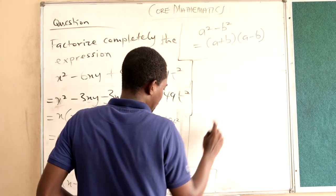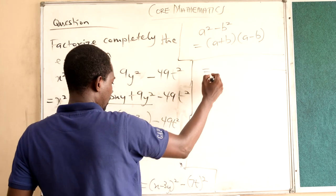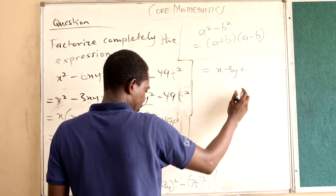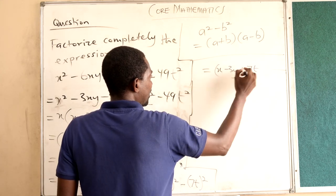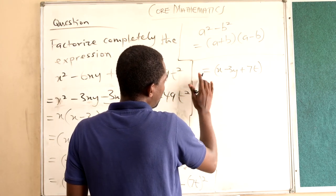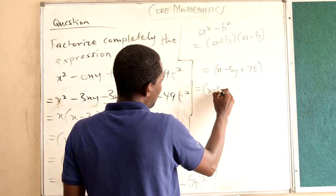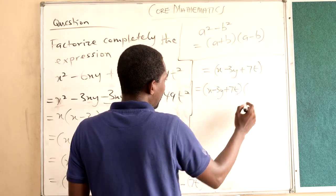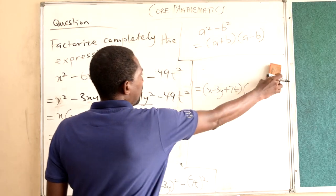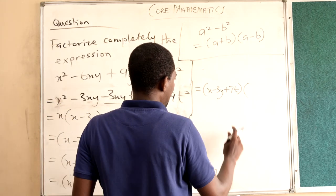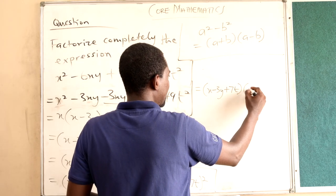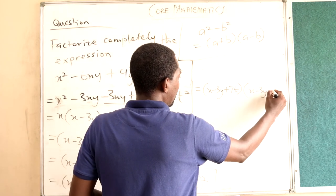So this one is going to be x minus 3y plus the second number, 7t. I want to put them together: x minus 3y plus 7t, multiplying the first number minus the second number. So the first one was adding, the second one was subtracting: x minus 3y minus 7t.